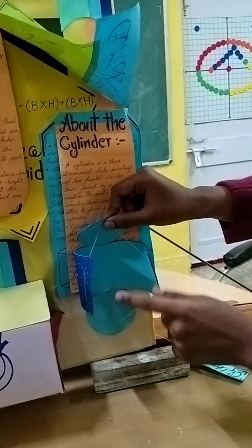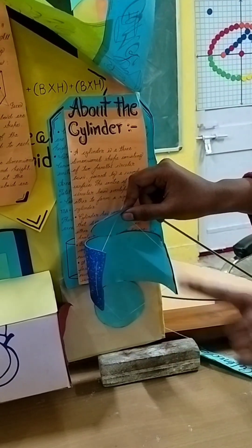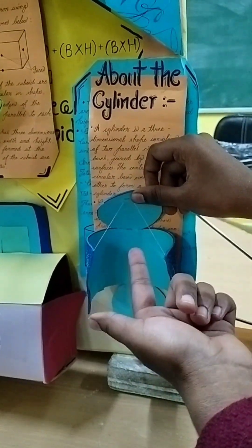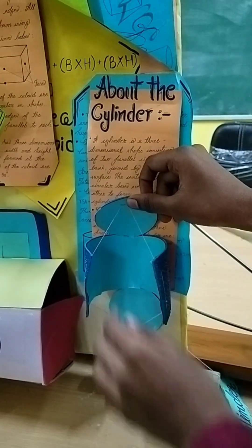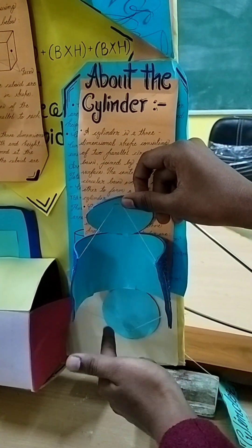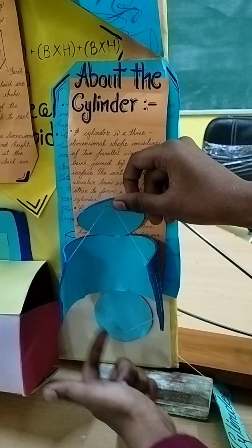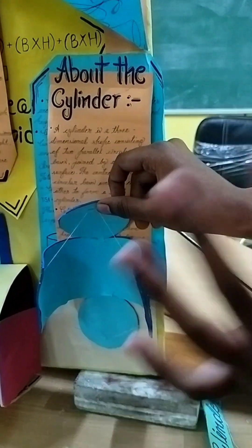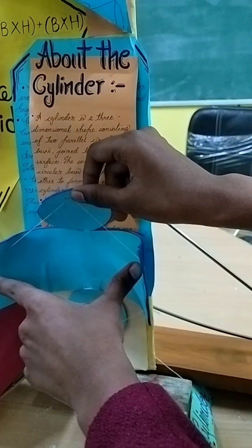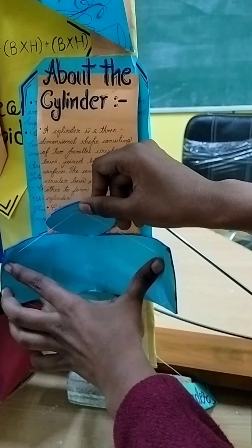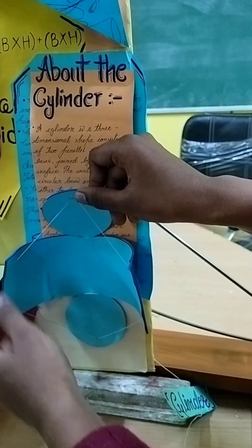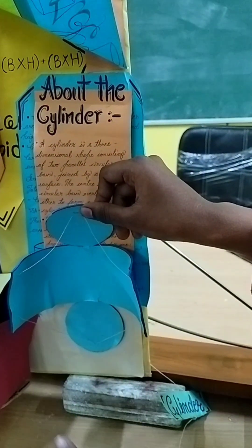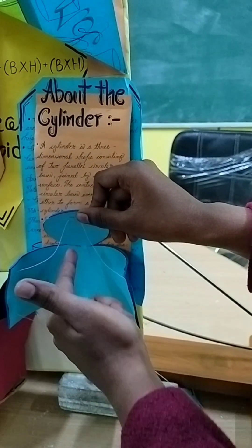When we roll it out, it forms the curved surface. The area of a circle is πr². The first circular base is parallel and congruent to the second circular base. So the area of the two circular bases is πr² + πr². Now we find the area of the curved surface. When we open it, it forms a rectangular base. The area of a rectangle is length × breadth.